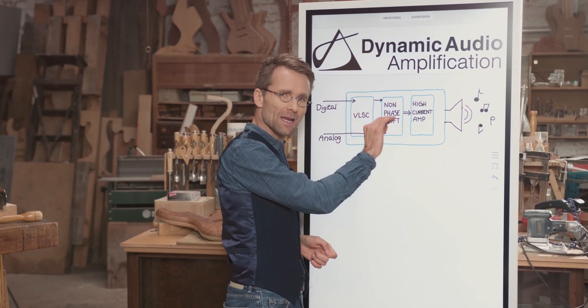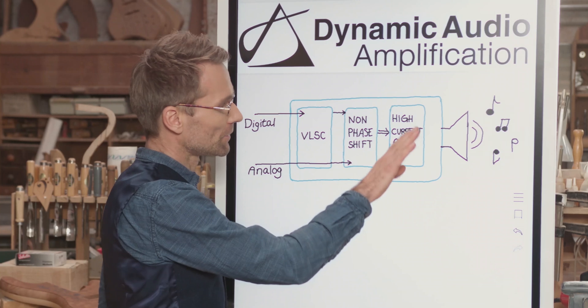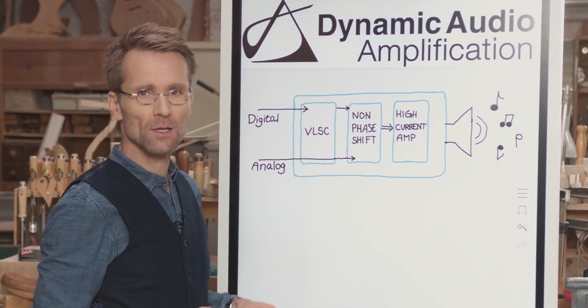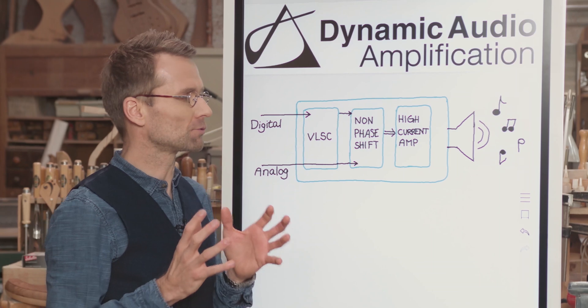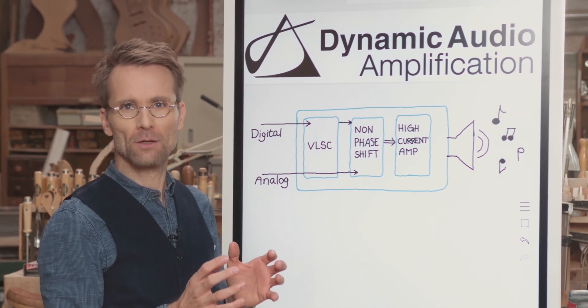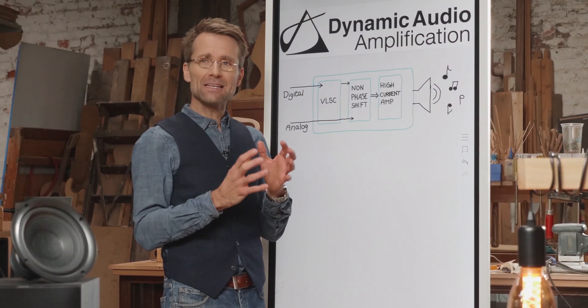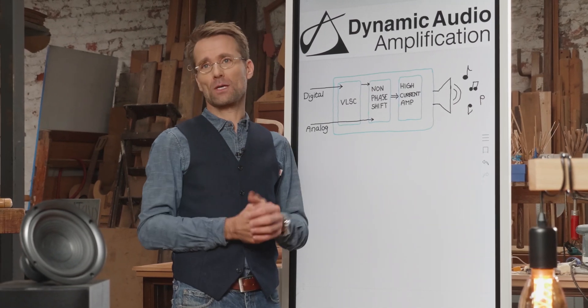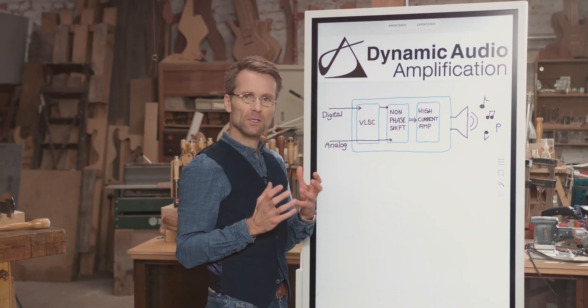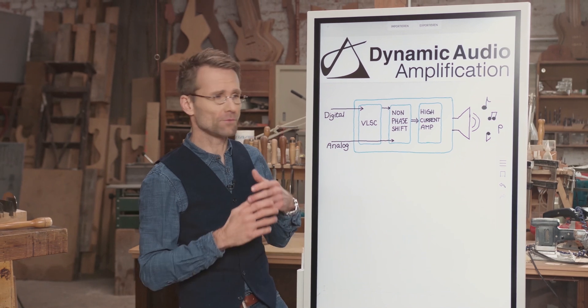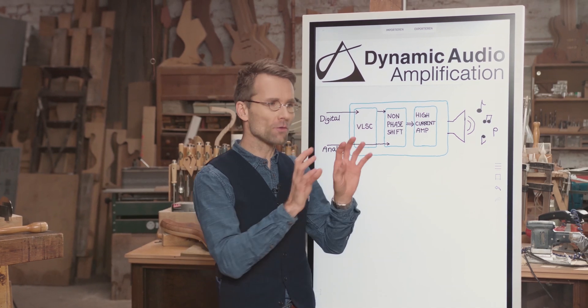The amplified analog signal is then handed over to the high current amp, which is a special system to actually grasp the speaker. The drivers and the speakers need to be moved with as much control as we can muster, so the dynamic sounds of your music, your films, or whatever you put into our amplifier, are controlled correctly on the speaker side — on the physical side of the speaker. To tell you all about this in detail, stay tuned for the next videos of Inside Onkyo.